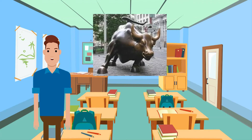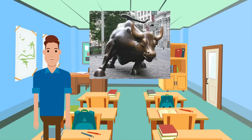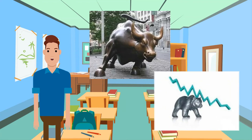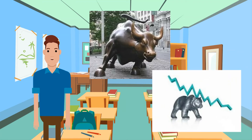When the stock market is doing well and prices are going up, this is called a bull market — prices are charging ahead. When the stock market is doing poorly and prices are going down, this is called a bear market. It's like the bear has attacked and there is blood on the floor.